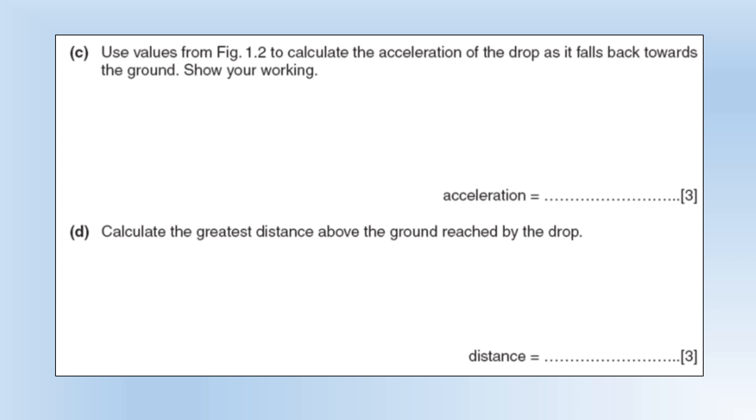Use values from the diagram to calculate the acceleration as it falls back towards the ground. We are finding the gradient - that would be the acceleration. The final speed is 40, the initial speed is 0. We divide that by the time taken and we end up with 10 meters per second squared. Calculate the greatest distance above the ground reached by the drop. We want to find the area up until four seconds - the area under the graph until it reaches its maximum height at four seconds. That gives us 80 meters. Because the next area will be the distance traveling back down to the ground again.